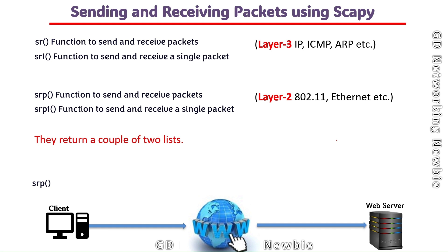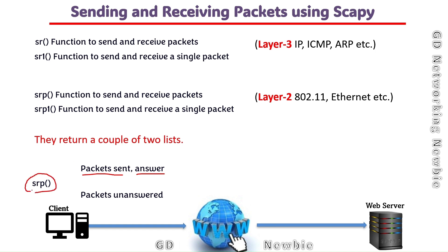In addition to that, these functions return two lists. For example, if we use srp, it will return two lists: in one list we will have packets sent as well as the answers, and then we also have information about packets which are not answered, so unanswered packets will also be returned and saved from that function.